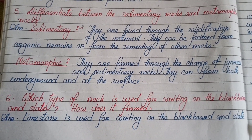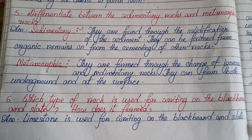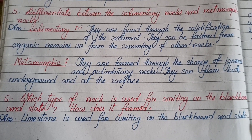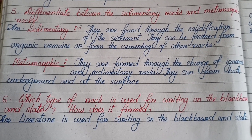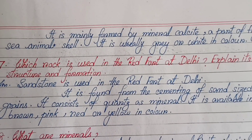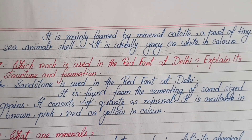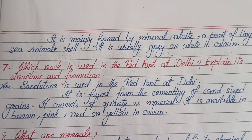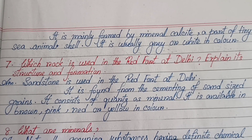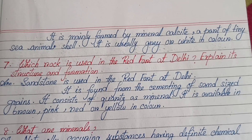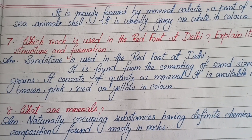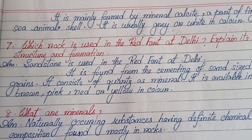Number six: Which type of rock is used for writing on the blackboard and slate? How does it form? Limestone is used for writing on the blackboard and slate. It is mainly formed by mineral calcite, a part of tiny sea animal shells. It is usually gray or white in color.